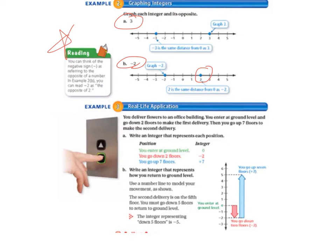Example 3, Real life application. You deliver flowers to an office building. You enter at ground level and go down 2 floors to make the first delivery. Then you go up 7 floors to make the second delivery. We're going to write an integer that represents each position. So we enter at ground level, so that's 0. And then we go down 2 floors, so that's negative 2. And then we go up 7 floors, so that's positive 7. So, you can see that drawn on the vertical number line to the right.